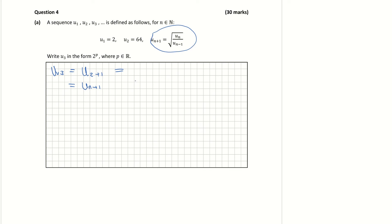Using the recurrence relation, that's the same as the square root of u_n over u(n-1). Here u_n is u2 and u(n-1) is u1, so I have the square root of u2 over u(2-1), which is u1. The value of u2 from the question is 64, and that's over u1.